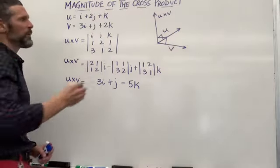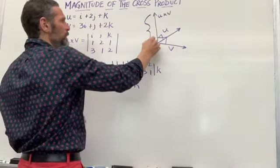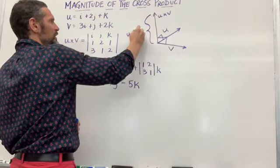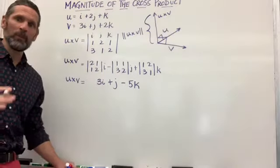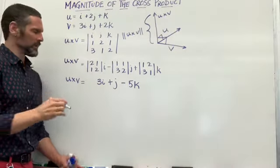Now if we want to find out how big this vector is, that's u cross v magnitude. And I'm simply going to apply the Pythagorean theorem essentially in three dimensions.